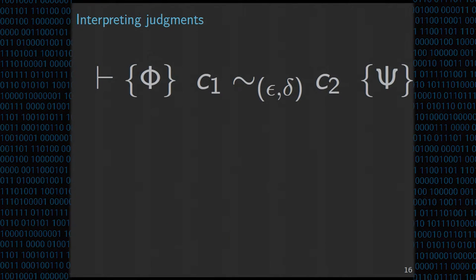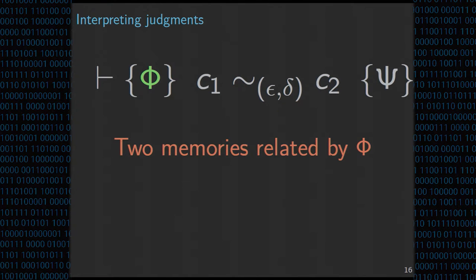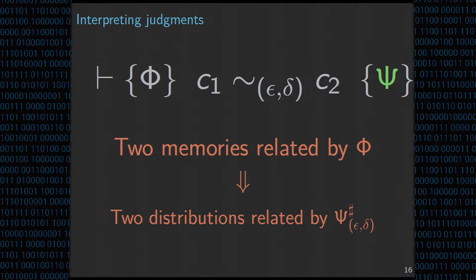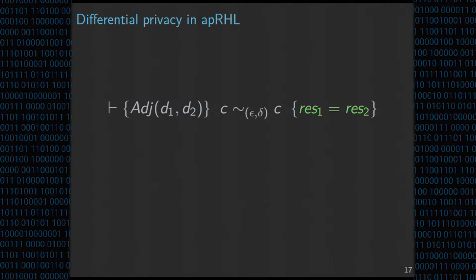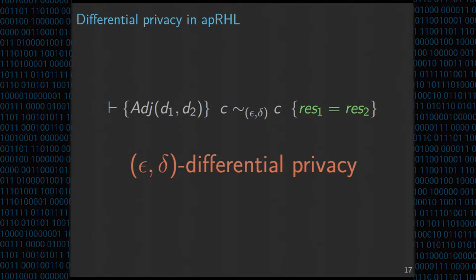To interpret these judgments: roughly, for every two memories related by phi, the two output distributions are related by an epsilon-delta approximate coupling with support psi. For example, to express differential privacy in this logic: for any two memories with two adjacent databases as precondition, the resulting distributions are related by an epsilon-delta approximate coupling with support res1 equals res2 — unfolding definitions, this just means C is epsilon-delta differentially private.